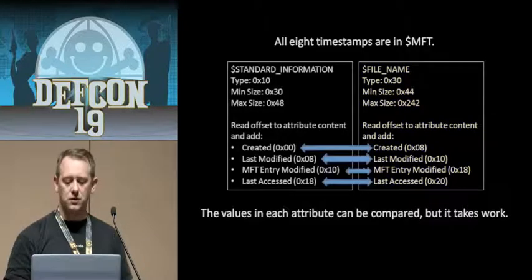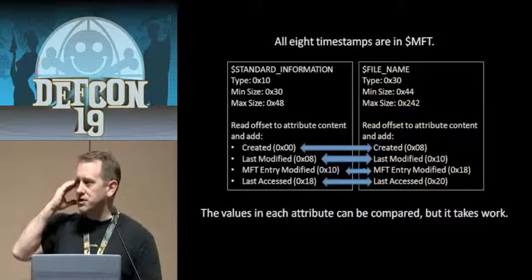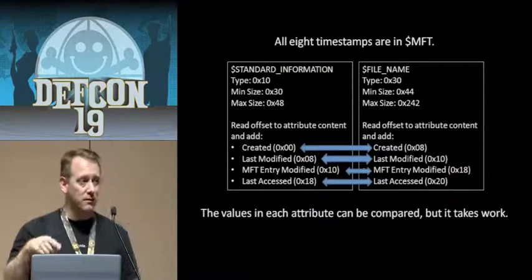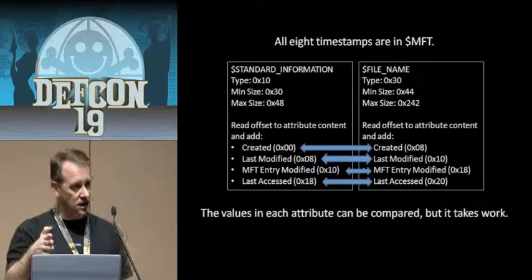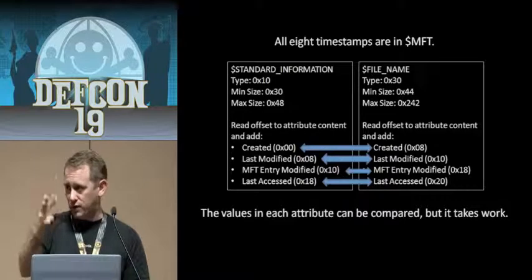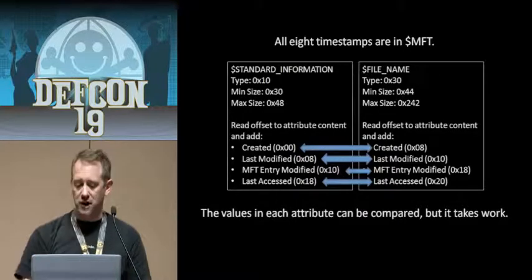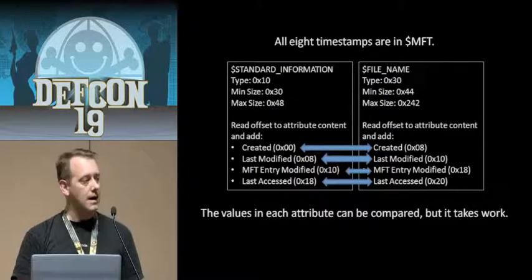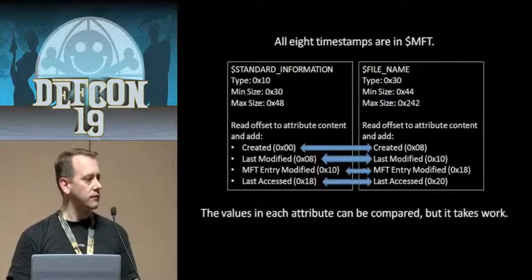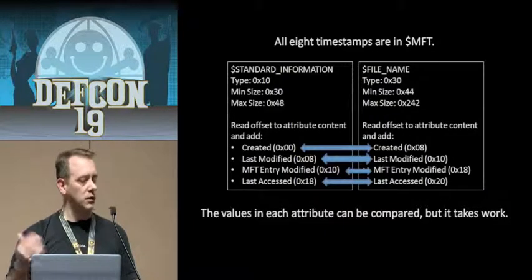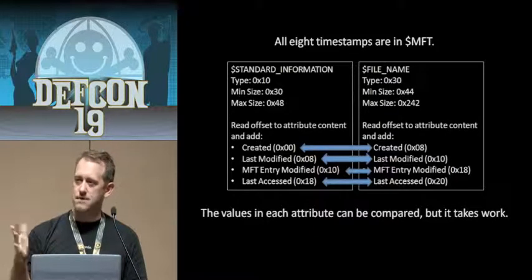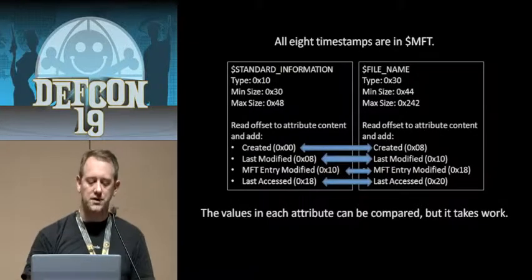So there's a seam in the story here. What's supposed to happen on a Windows-based system is you modify files and standard information, and when you make another change, those four data values are supposed to swing over and change the file name attributes. But sometimes when you use time-stomping tools, you're not going through the Windows API, so Windows doesn't always update — and therefore we have timestamps that aren't in sync.